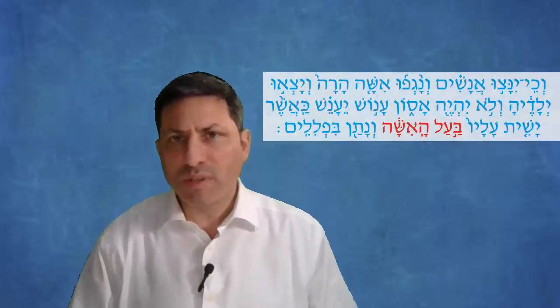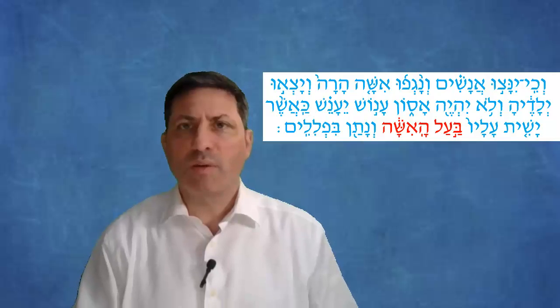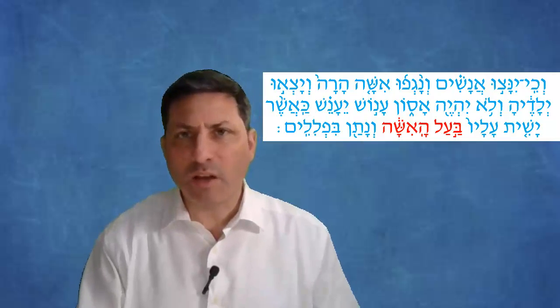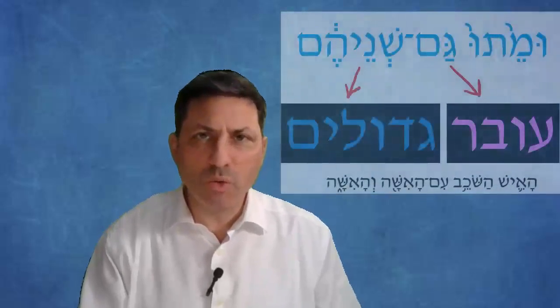Says the Mishnah, if a woman is pregnant and she's being let out to be executed, we do not wait until she gives birth. Although when it comes to monetary issues the husband has a claim on the fetus, if somebody kills the fetus they must pay the husband. So I might say that the husband could say wait a minute, it's my baby, I don't want it to be killed. No, we kill the baby because the Torah says umesu gam shnei.